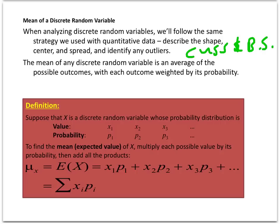To find the mean or average of a discrete random variable, we have to account for the fact that not every outcome is equally likely. Some outcomes happen more often than others. The formula for the mean — also called the expected value — is to multiply each value by its corresponding probability and add them all up. The sigma notation means to sum them up. It looks complicated but is relatively easy to use.